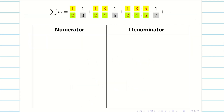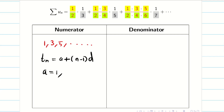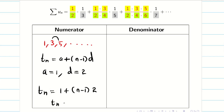Let us find the numerator and denominator. For the yellow term: 1, 3, 5, etc. The nth term is a + (n−1)d, where a = 1 and d = 2. Therefore, the nth term is 1 + (n−1)×2 = 2n − 1. The numerator is done.